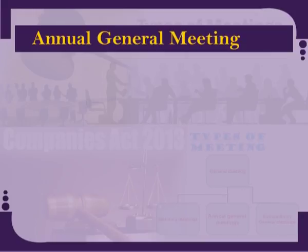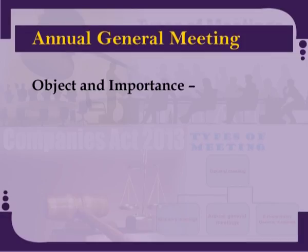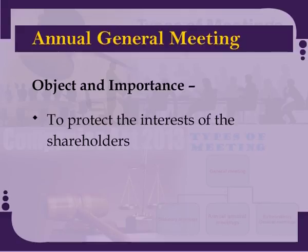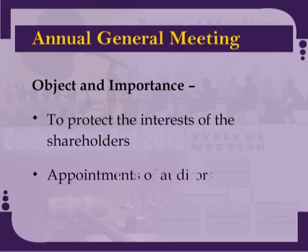Annual general meetings are opportunities for shareholders to exercise their powers of control. Holding an annual general meeting is mandatory. Such meetings should be held in every calendar year. One of the objects of the annual general meeting is to protect the interests of the shareholders. Hence, it would be better if these members meet at least once every year to review the working of the company. Appointment of auditors are also made at the annual general meetings.